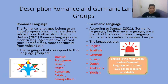The Romance languages are Spanish, Portuguese, French, Italian, Romanian, Catalan, among others. Germanic languages, like Romance languages, are a branch of the Indo-European language family, which is native to Western Europe.